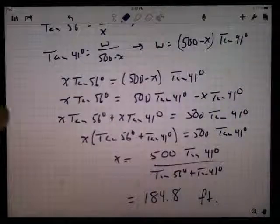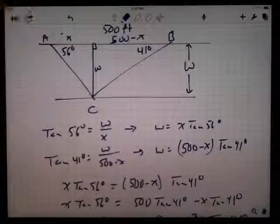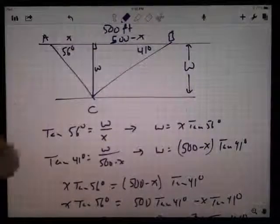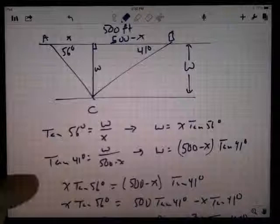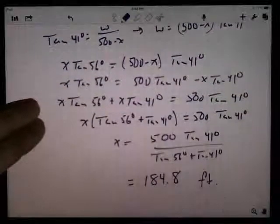When I drew that perpendicular, I cut the 500 into two pieces. I didn't know what each piece was, but it gave me two triangles. I had two variables, two triangles to work with. I could come up with two equations, solve them simultaneously. That's what I did. And I got 184 feet across.